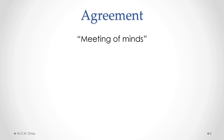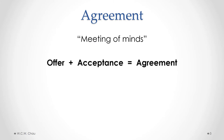To have an agreement we must have what is called a meeting of minds. One party makes an offer to another person, and that other person accepts all of the terms of that offer, which results in what we call an agreement. By having that agreement between the two parties, we have a meeting of minds.